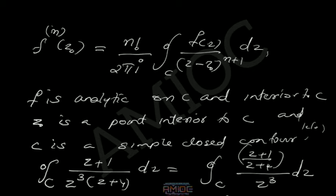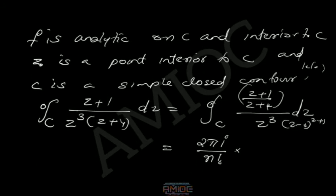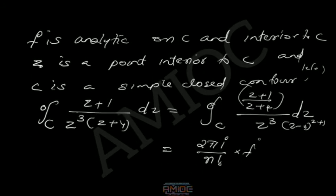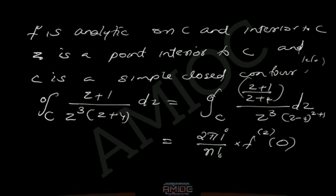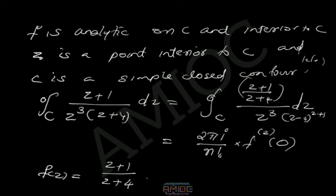The value of n is 2, so the integral equals (2πi/2!) times the second derivative of f at z₀ = 0, where f(z) = (z+1)/(z+4). Our aim is to evaluate the second derivative of f at the point z = 0.